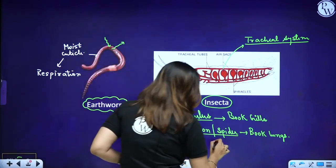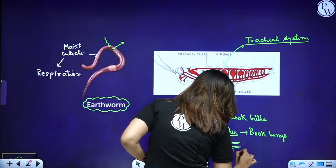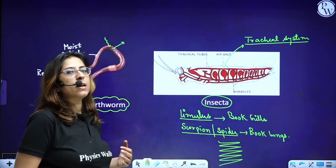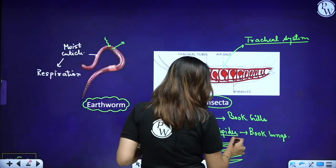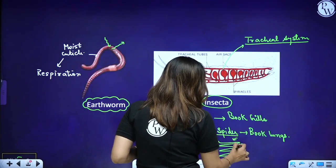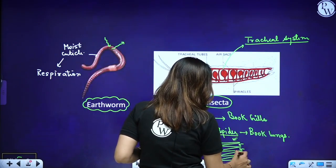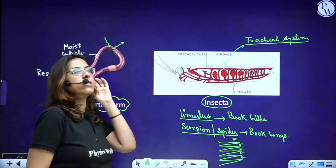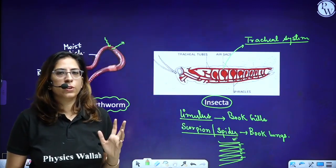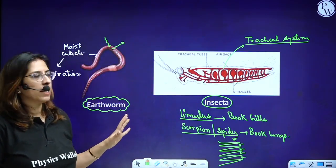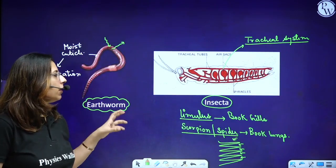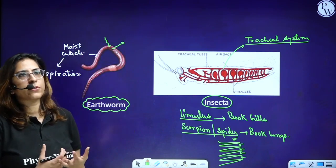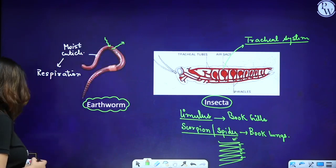Important examples to remember: Limulus has book gills, while scorpions and spiders have book lungs. We have discussed Limulus in the previous chapter. Now let's talk about mollusks — in that group you will find ctenidia, which are gills.